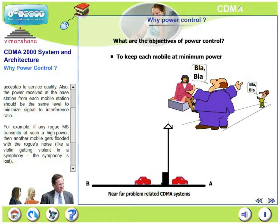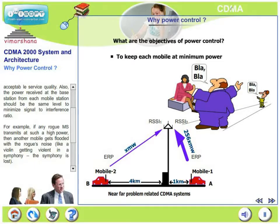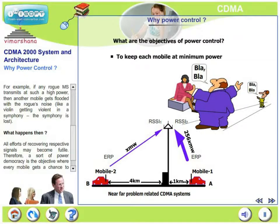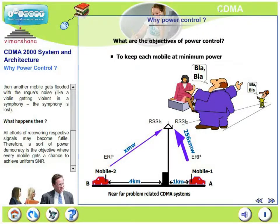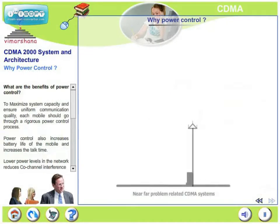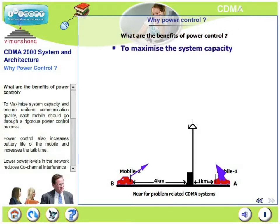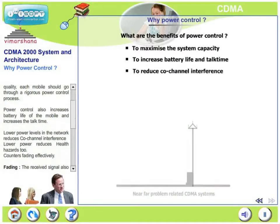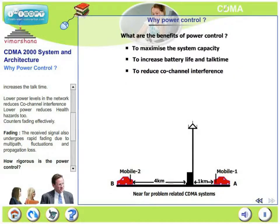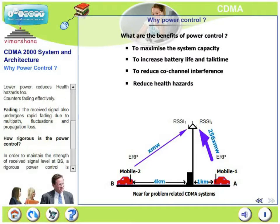For example, if any rogue mobile transmits at very high power, another mobile nearby gets flooded with this rogue's noise — like a violin getting violent in a symphony, and the symphony is totally lost. All efforts of recovering respective signals may become futile. Therefore, a sort of power democracy is the objective, where every mobile gets a chance to achieve uniform signal-to-noise ratio — mobiles transmit at just adequate power, neither more nor less. Power control maximizes system capacity, ensures uniform communication quality, increases battery life and talk time, reduces co-channel interference, reduces health hazards, and counters fading very effectively.